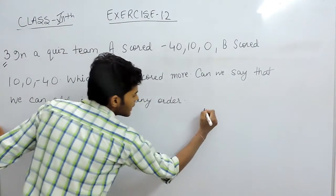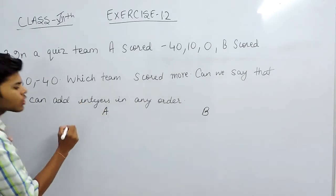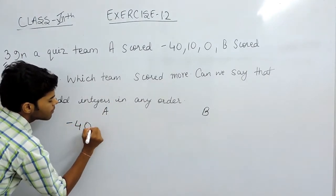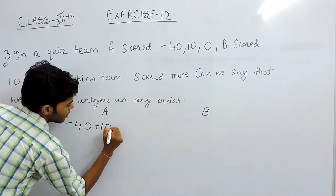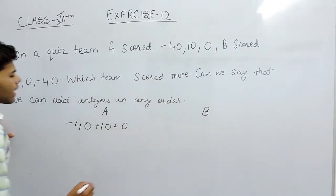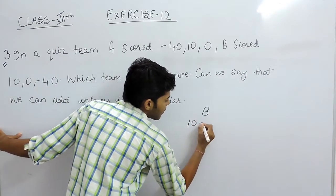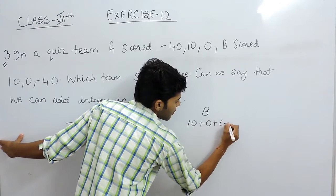This is team A, this is team B. The scores are minus 40 plus 10 plus 0, and the scores are 10 plus 0 plus minus 40.